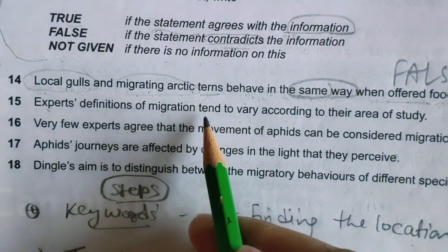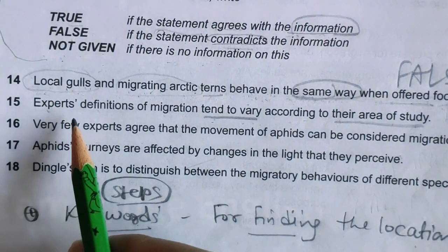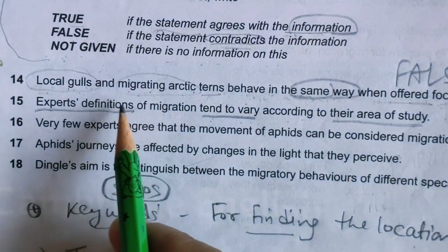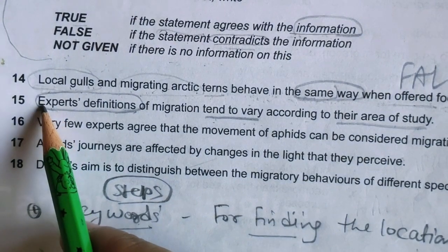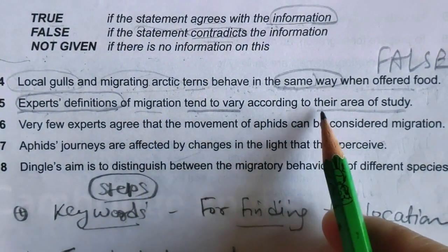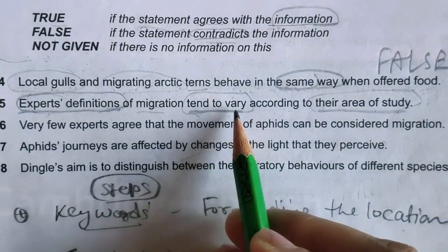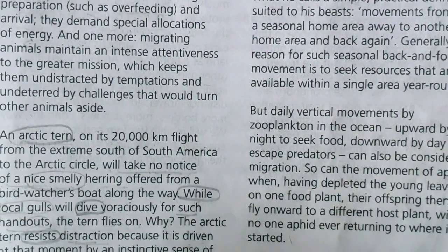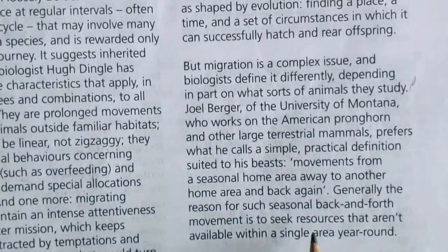Question 15: 'Experts' definitions of migration tend to vary according to their area of study.' To find the location, we look for 'experts' or 'scientists' discussing definitions of migration. 'Tend to vary' means they differ or are different from one another. Let's find the answer in the passage.